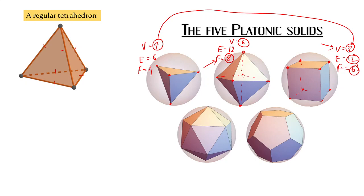There are connections — six: the number of edges in a tetrahedron, the number of vertices in an octahedron, the number of faces in a cube. Six is appearing everywhere. There is some very interesting connection.